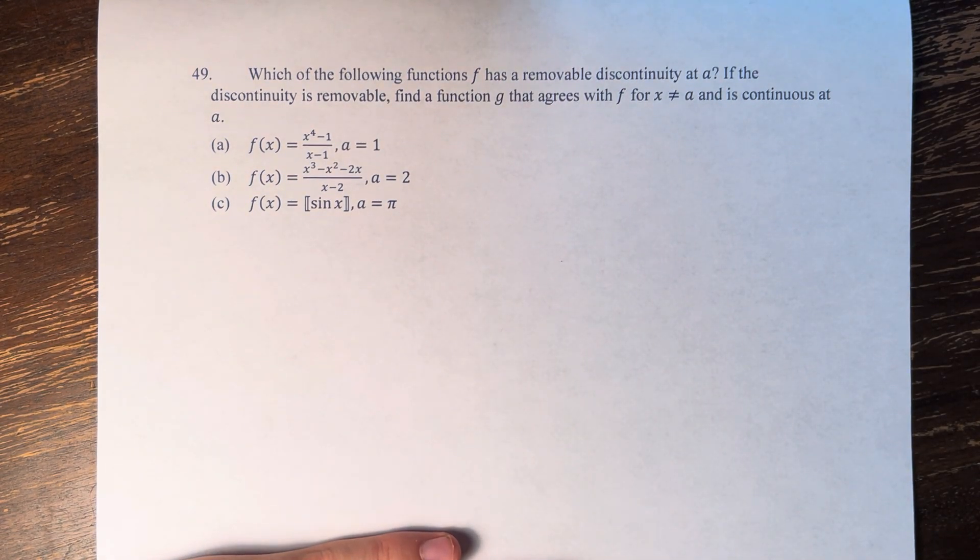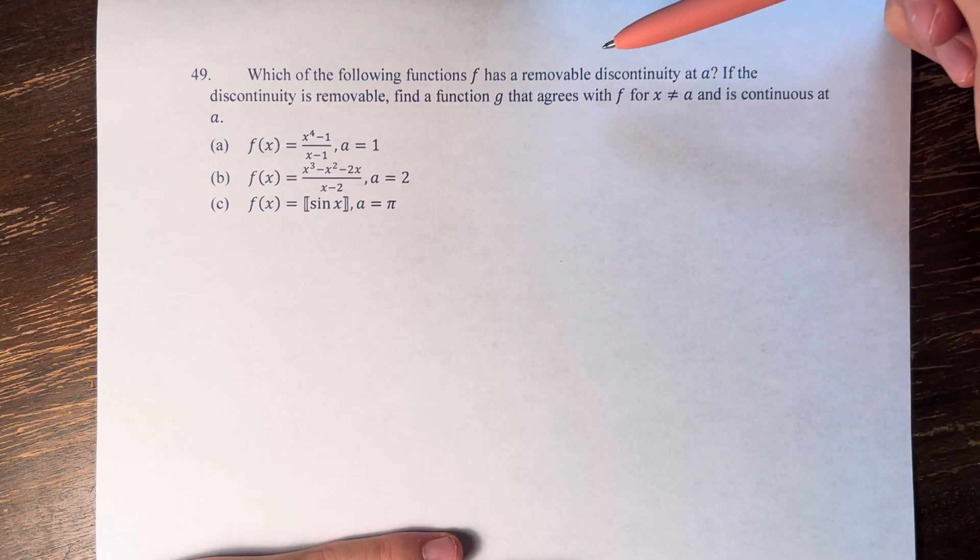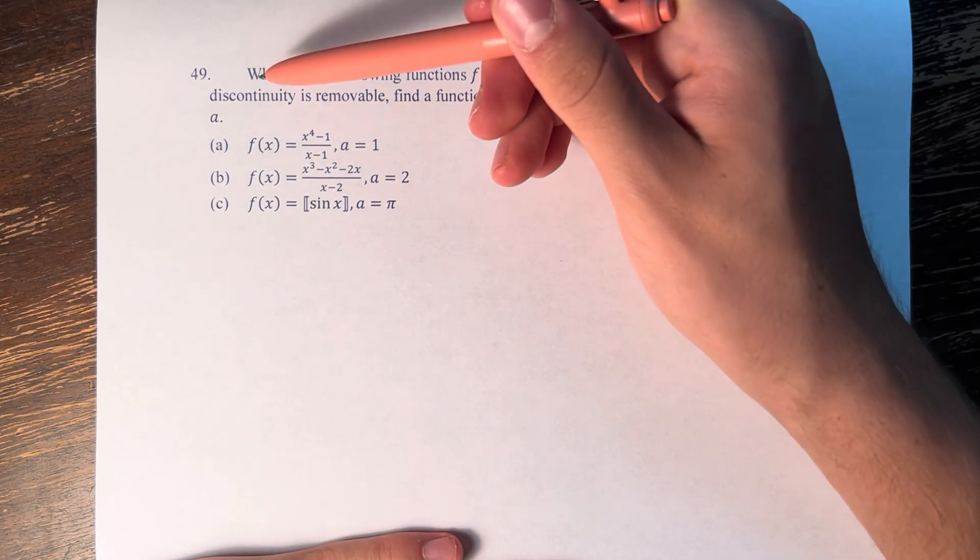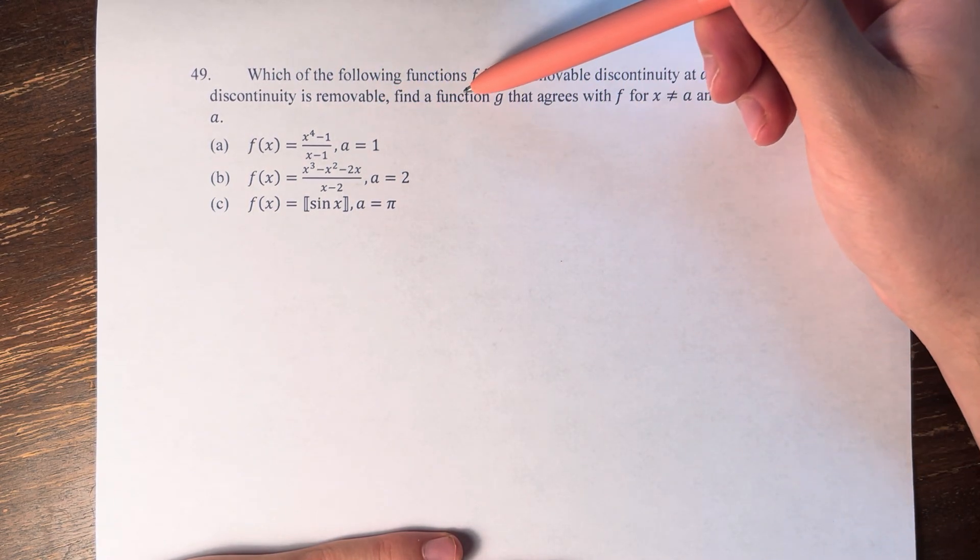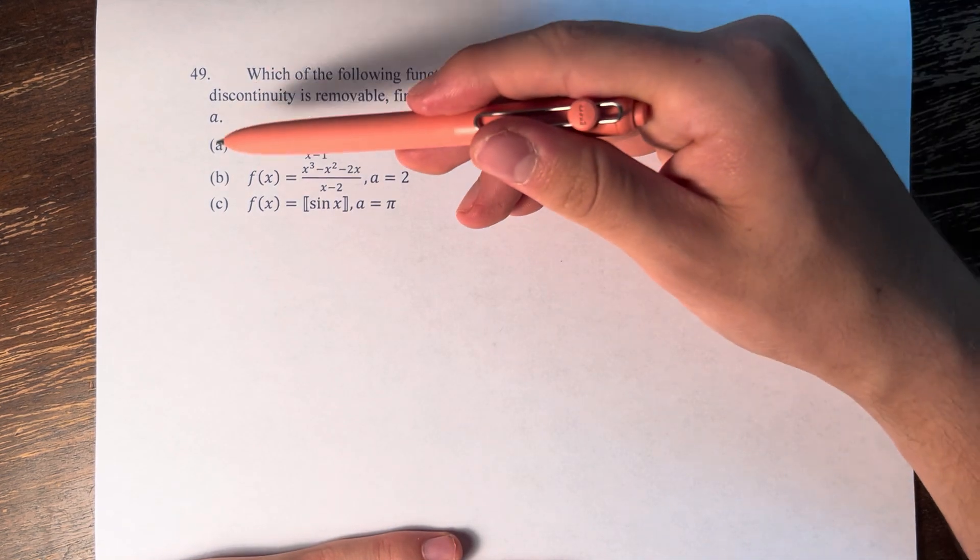Hello and welcome back to another video. In this problem, we're told which of the following functions f has a removable discontinuity at a. If the discontinuity is removable, find a function g that agrees with f for x is not equal to a and is continuous at a.